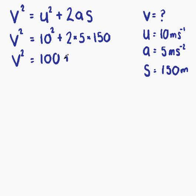Plus, and then we have 2 times 5 times 150. 2 times 5 is 10, 10 times 150 is 1,500. So we have V squared equals 100 plus 1,500. That means that V squared equals 1,600.